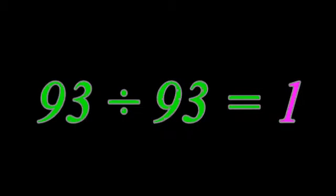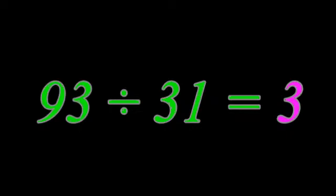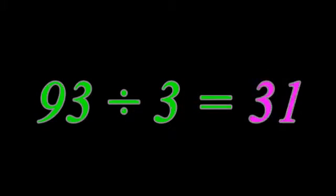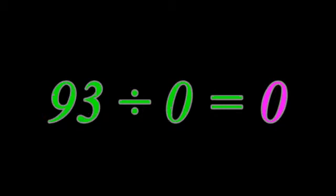93 divided by 93 equals 1. 93 divided by 31 equals 3. 93 divided by 3 equals 31. 93 divided by 1 equals 93. 93 divided by 0 equals 0.